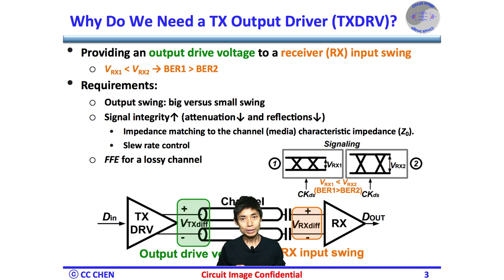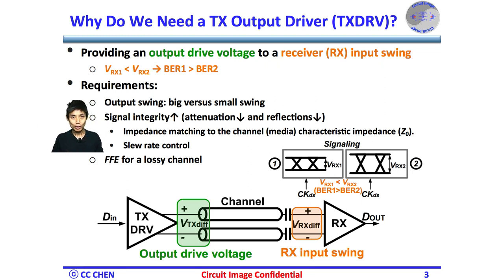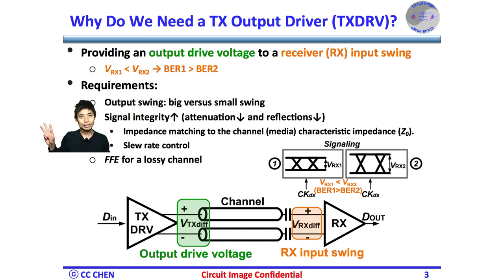We know why we need a TX driver, and then we must understand a few TX driver design requirements. First, we need an output driver swing that can be adjusted to be a big or small swing. Second, we need to improve the signal integrity to reduce the BER — not only less signal attenuation, but also less reflection is a must through the impedance match and slew-rate control. Third, a feed-forward equalizer FFE is needed for a frequency-dependent loss channel, as described in the TX FFE video.